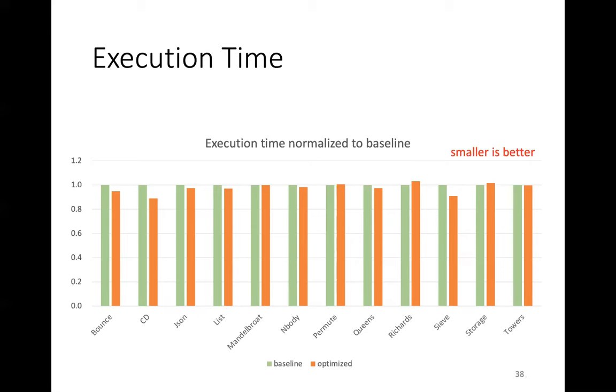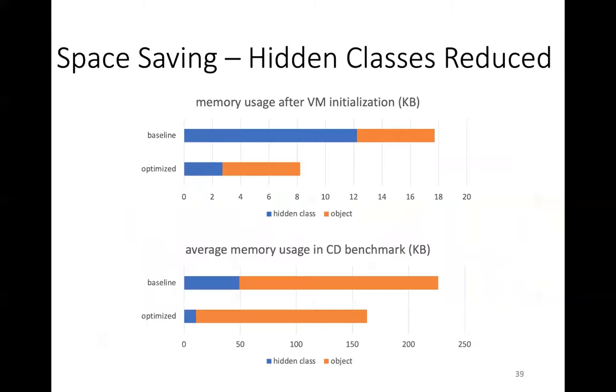As a result, execution time improved for most programs. This chart shows execution times normalized to baseline. The smaller, the better. The orange bars are for the optimized VM. This chart shows execution time for most programs are improved.